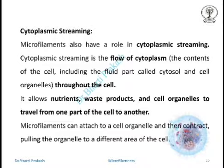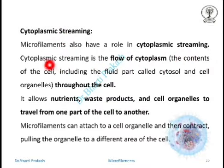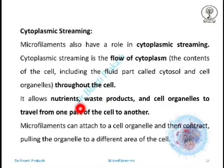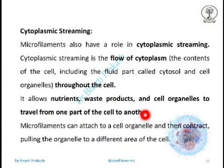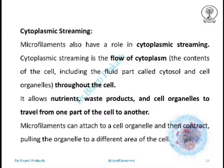Another important function is cytoplasmic streaming. Microfilaments have a role in cytoplasmic streaming, which is the flow of cytoplasm throughout the cell. It allows nutrients, waste products, and cell organelles to travel from one part of the cell to another. Microfilaments can attach to a cell organelle and then contract, pulling the organelle to a different area of the cell.